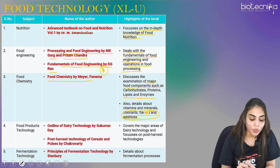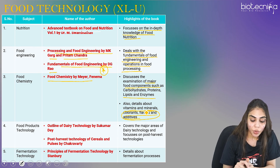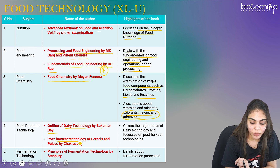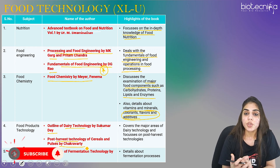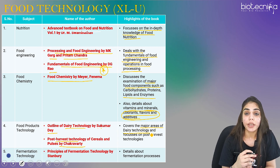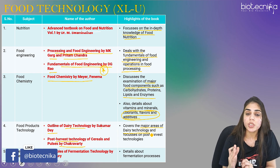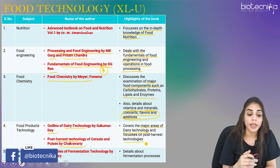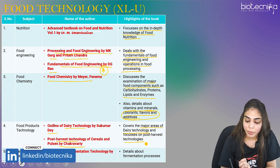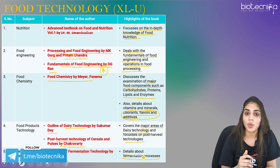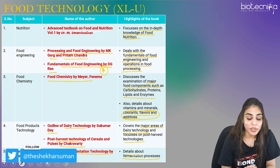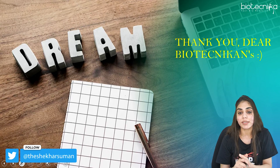The fourth section is food product technology. You can go for Outline of Dairy Technology by Sukumar Day, or Post Harvest Technology of Cereals and Pulses by Chakravarti — an Indian author book covering major areas of dairy technology and post-harvest technologies. For fermentation technology, you can go for Principles of Fermentation Technology by Stanbury. This covers all the reference books needed for preparation of the GATE Life Sciences exam.